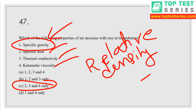Specific gravity is also known as relative density, and its formula is density of fluid divided by density of standard fluid. For water, specific gravity is 1 at 4 degrees centigrade — very common in fluid mechanics.